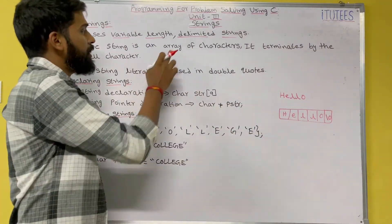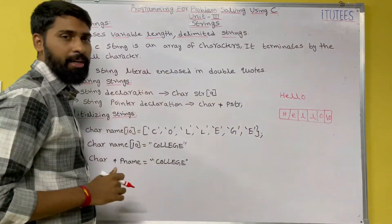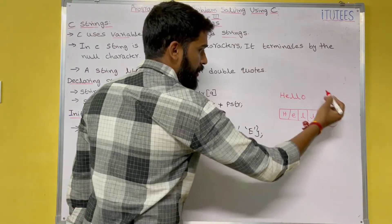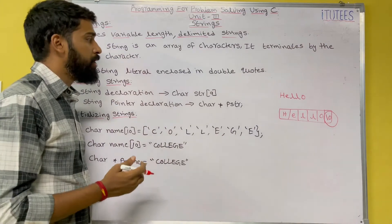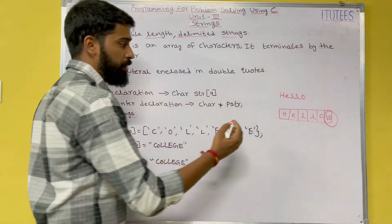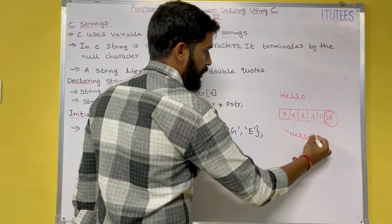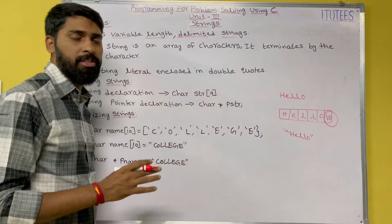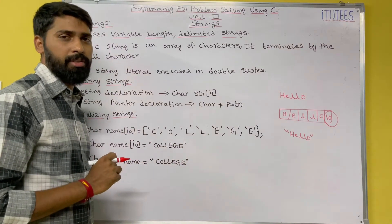In C, string as an array of characters. It terminates by the null character. Here it is terminated by using slash zero null character. String literal enclosed in double quotes. That means if I enclose this hello in double quotation, then this is a string, then we call this hello as a string in C language.